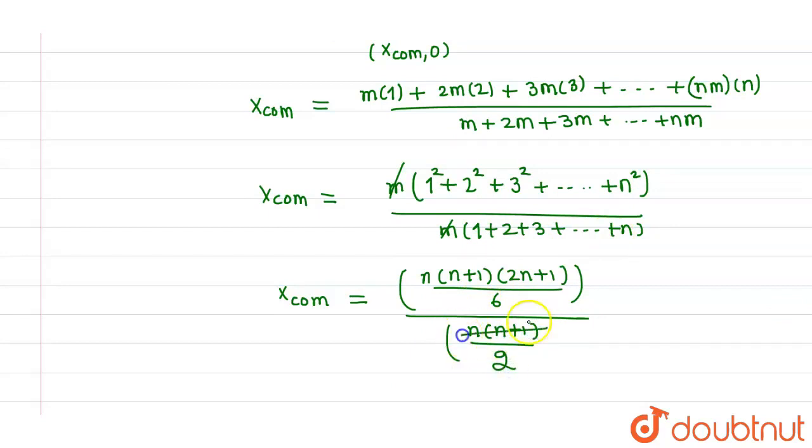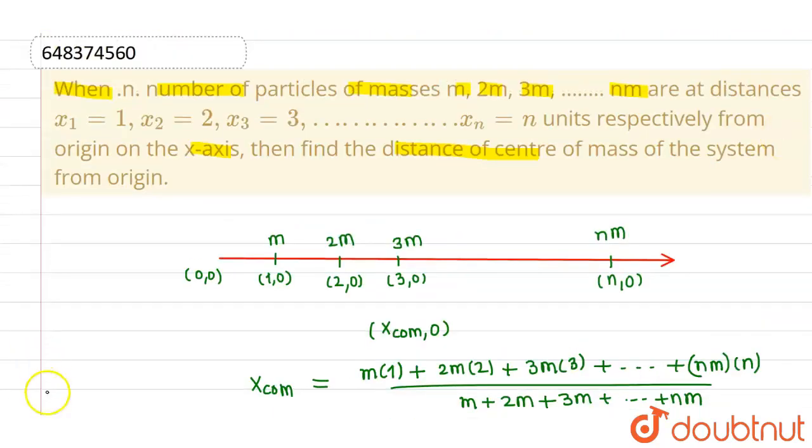So this n(n+1) and n(n+1) will cancel out, and overall I will be having, and this 2 will cancel out this 6 with 3, so (2n+1)/3. This is the distance of center of mass from the origin on x-axis. This is our final answer. I hope you understood, thank you.